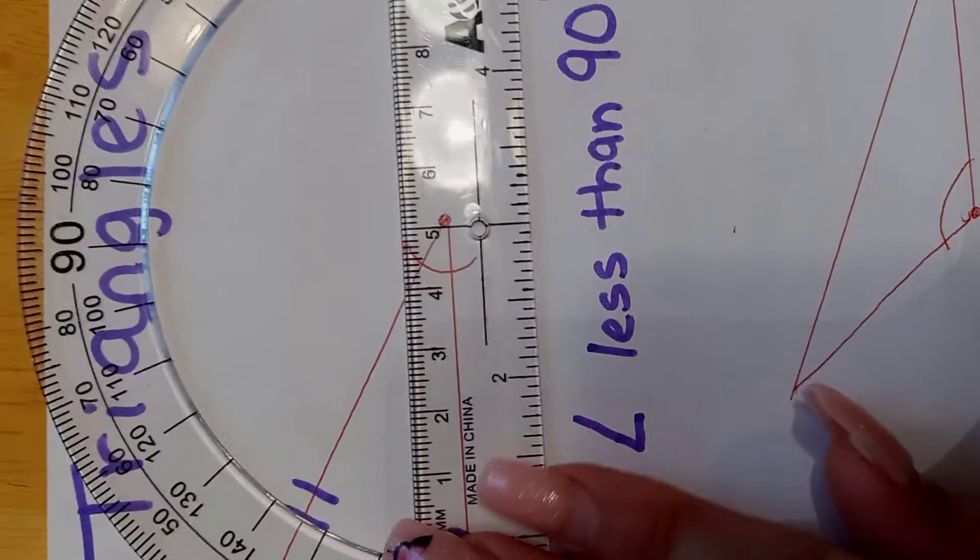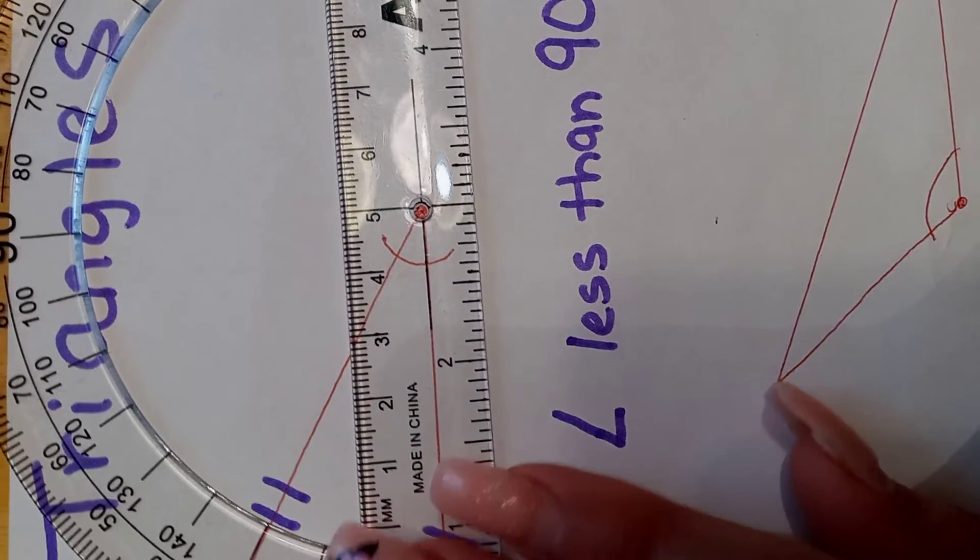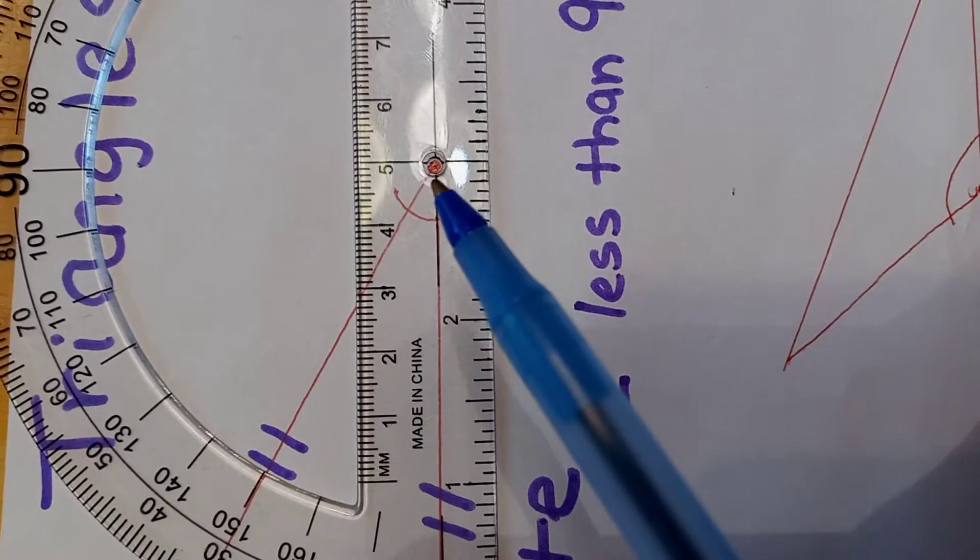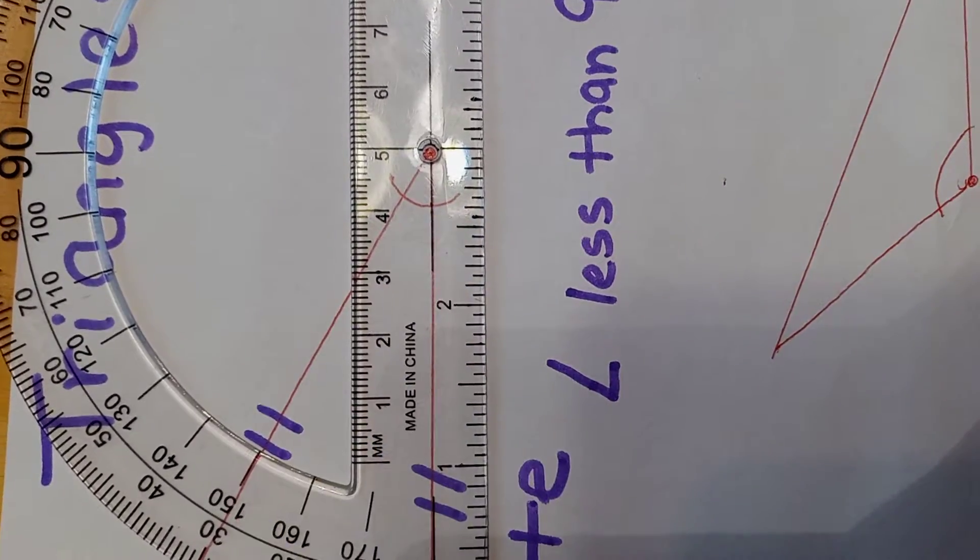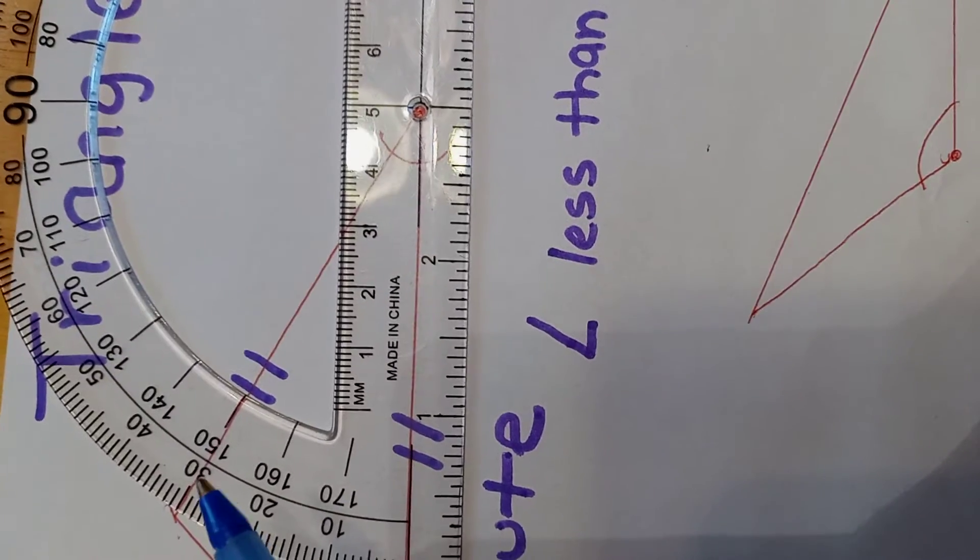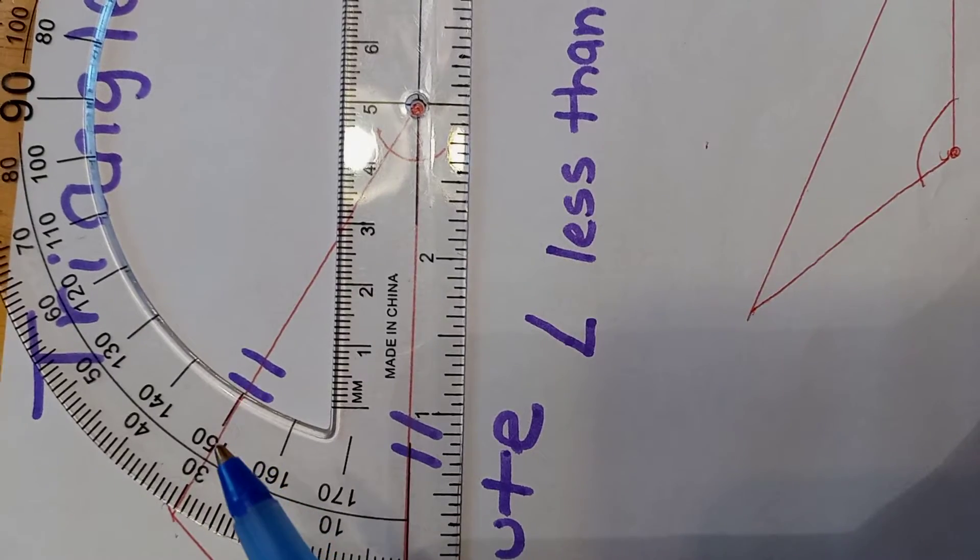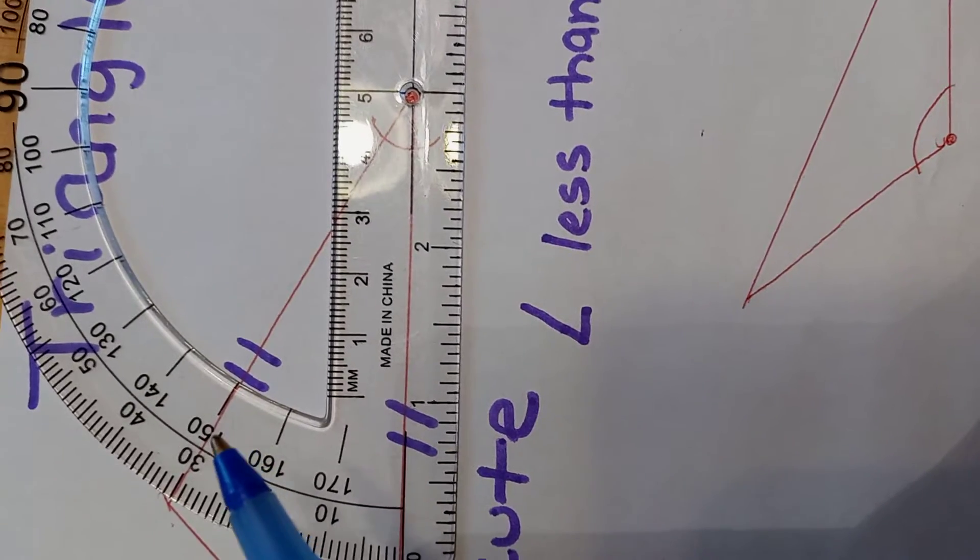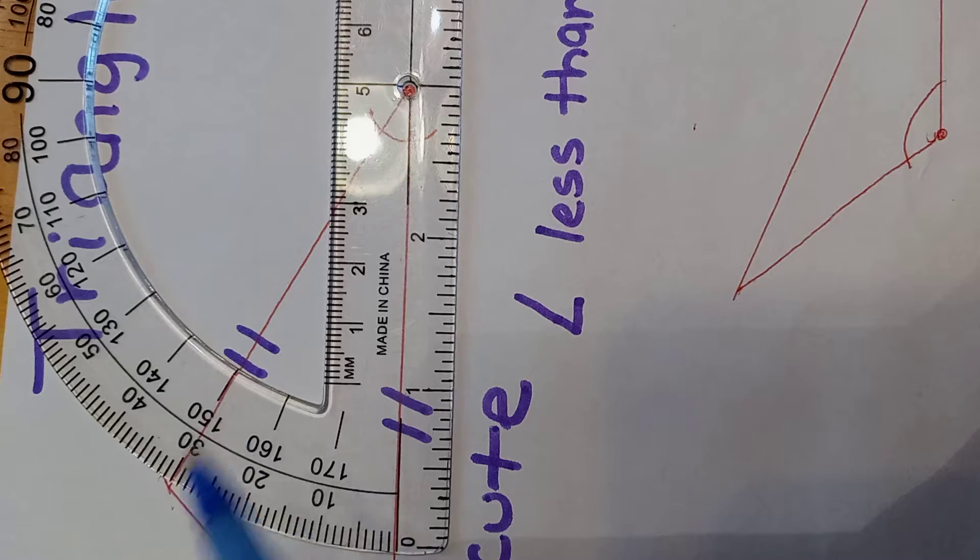And we see that this line over here is going right across, and we see that we have 30 degrees and 150 degrees. But the trick to knowing which one of these degrees is correct is we're going to look at the cross right here.